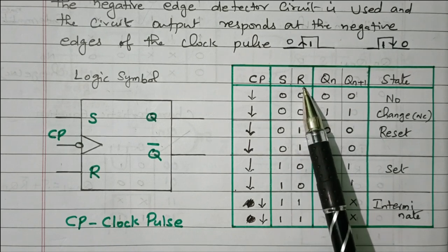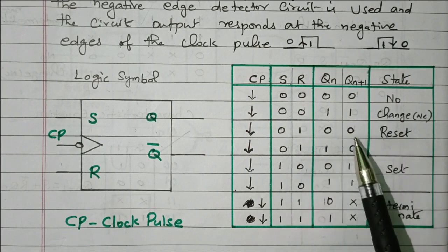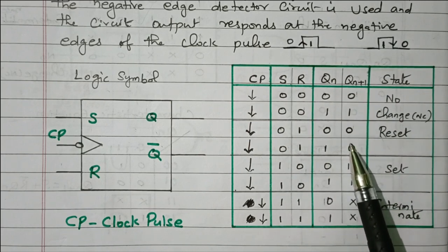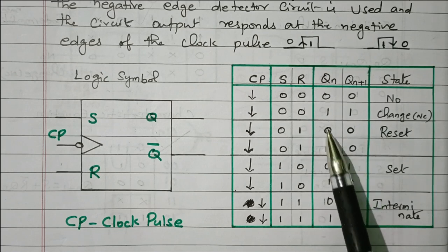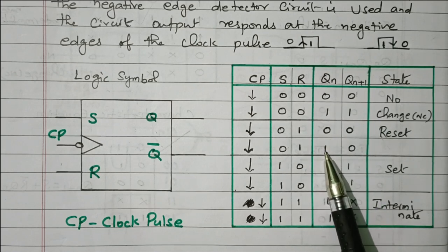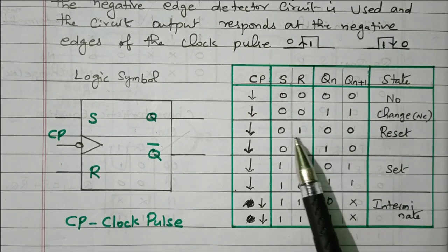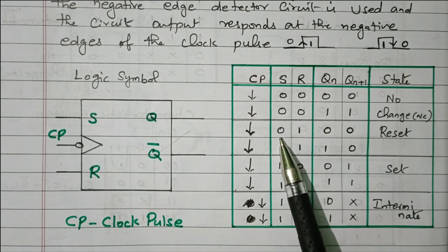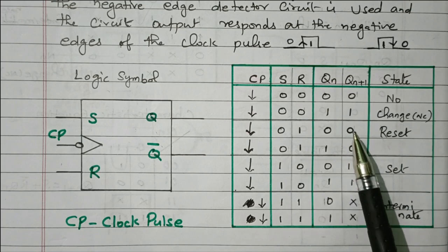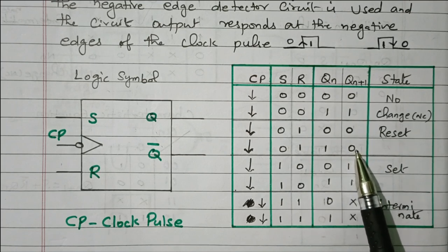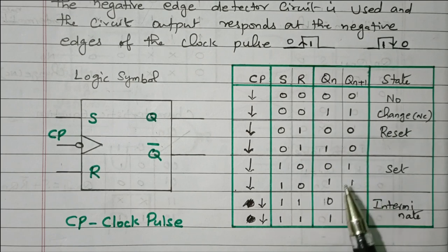When R=1 and S=0, this is the reset state. Reset means the output is forced to 0. Whether the present state is 0 or 1, it will be reset to 0. So 0 is maintained and 1 will change to 0.